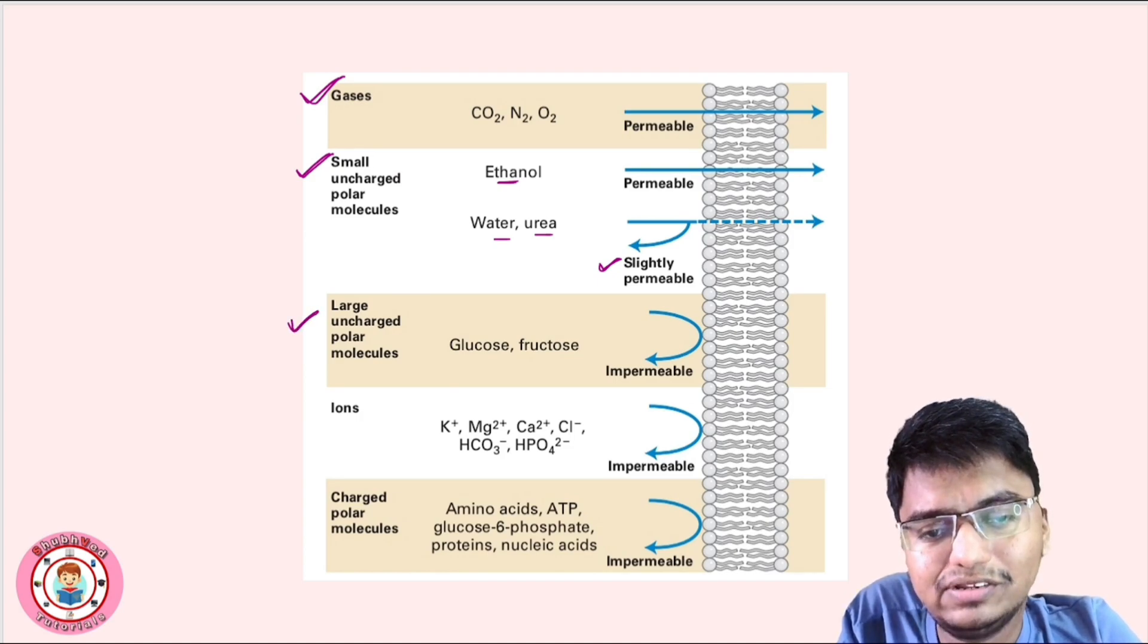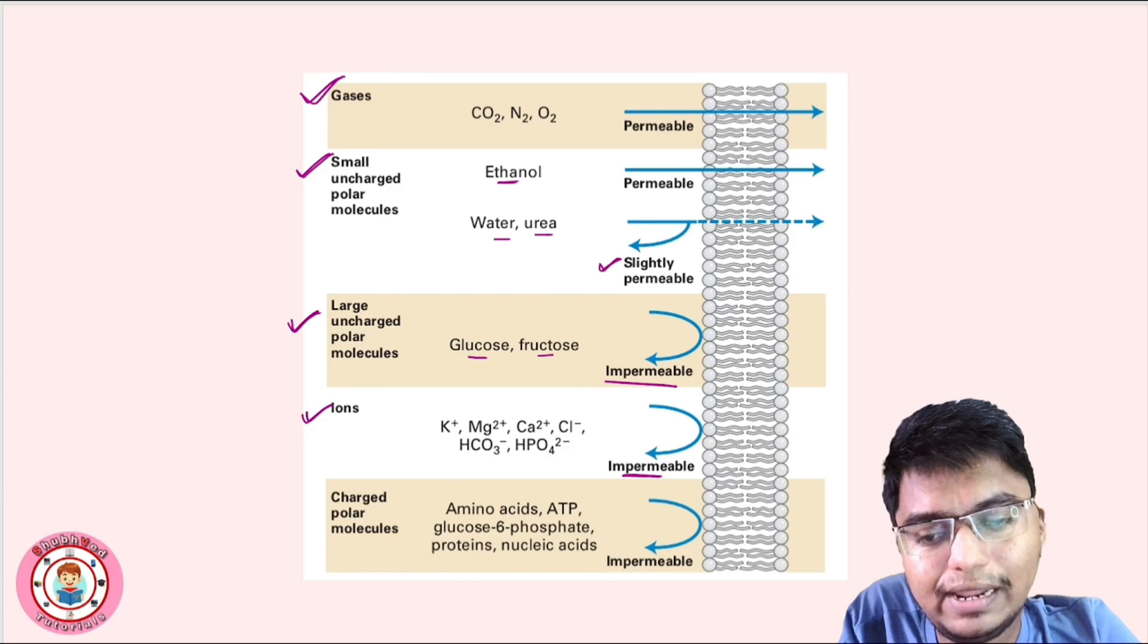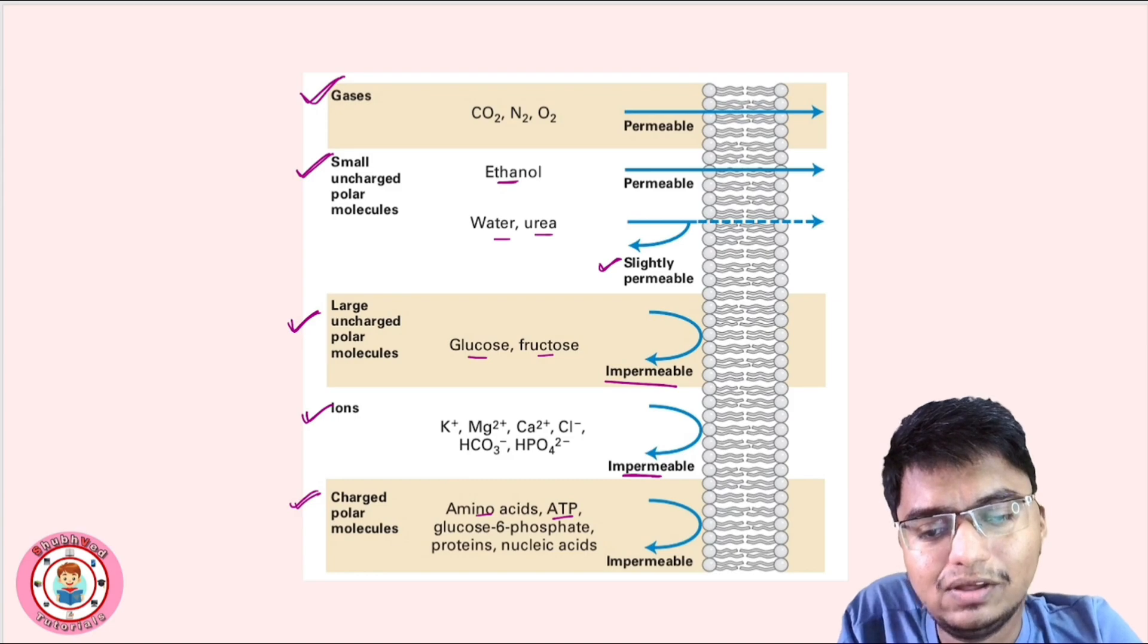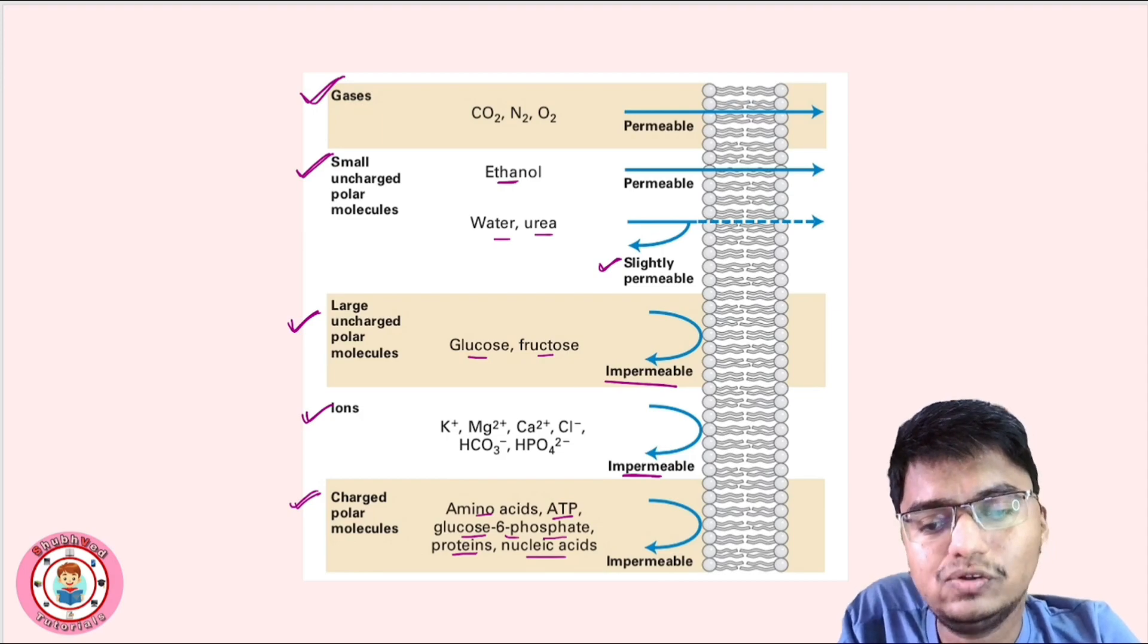Large uncharged polar molecules: glucose and fructose. This is impermeable. Ions are also impermeable. Then charged polar molecules, bulky molecules as I said: amino acids, glucose 6-phosphate, proteins, nucleic acid, DNA. This is impermeable.